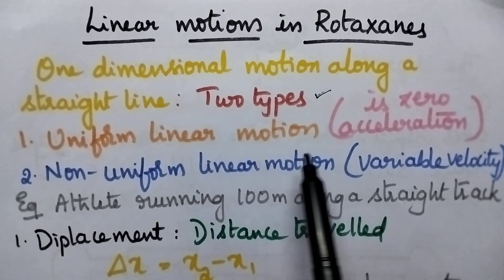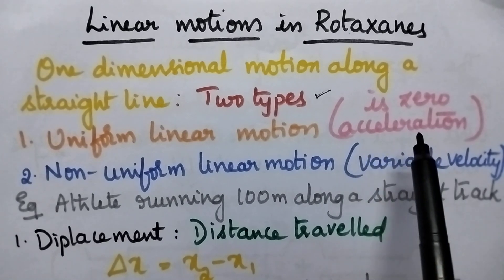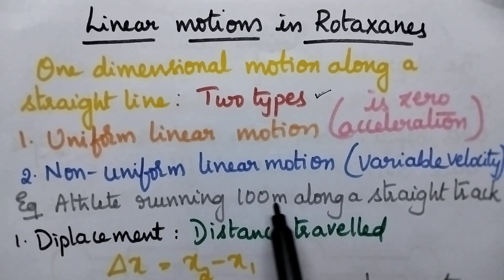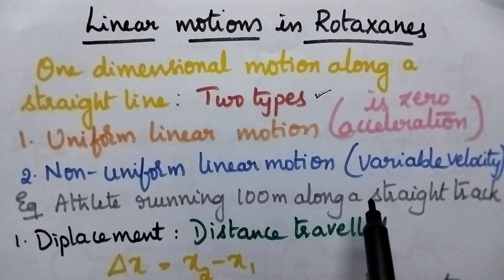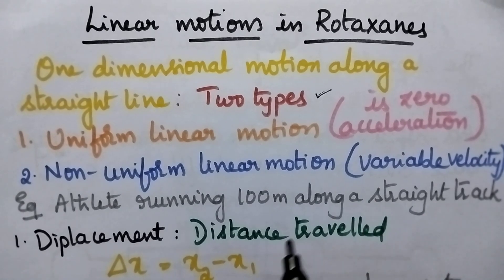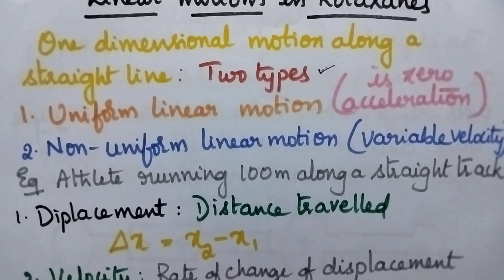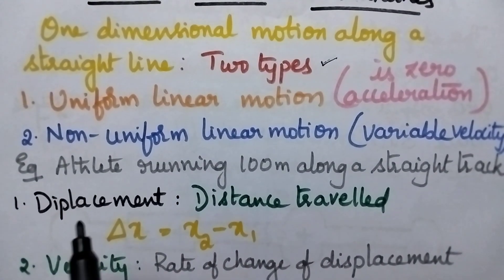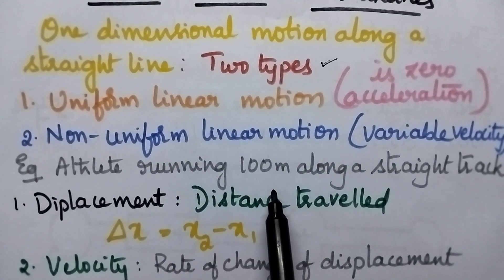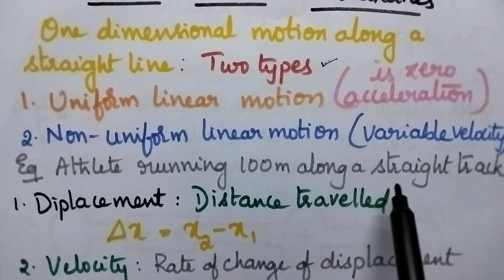Uniform linear motion means where the acceleration is zero. Non-uniform linear motion means there will be some change in the velocity. Let us consider non-uniform linear motion. Best example is an athlete running 100 meters along a straight track.